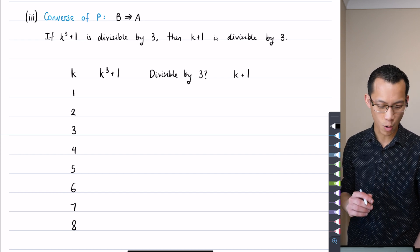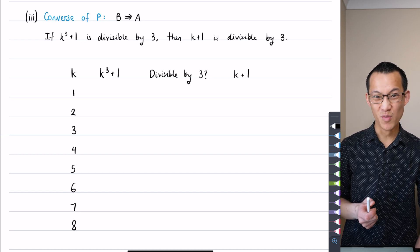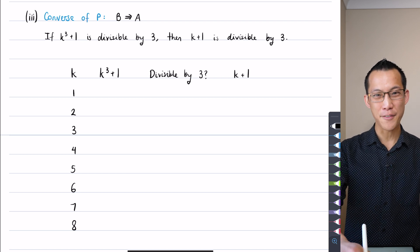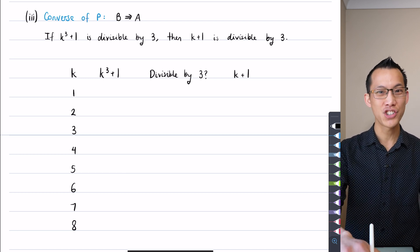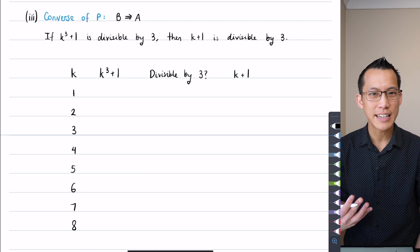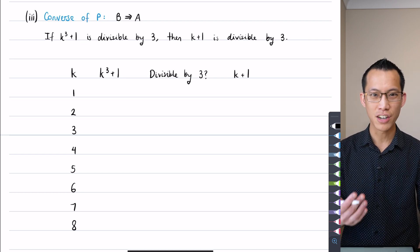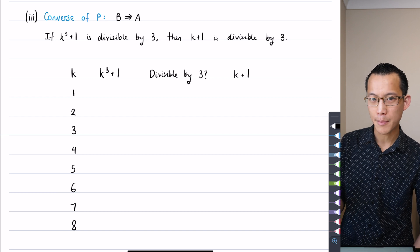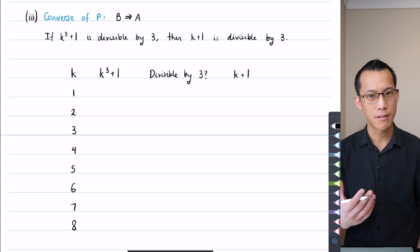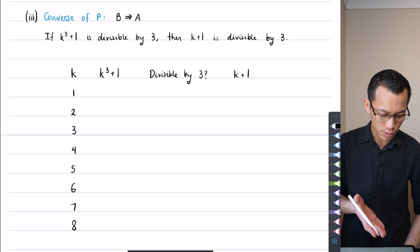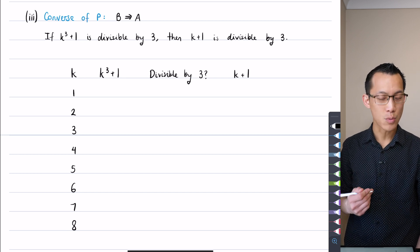The way that I went about this is I need to test some numbers. I need to get a vague sense of am I heading in the right direction, or all I need is a single counter example and then I can know it must be false sometimes, which means I can't prove it true for all values of k. So I'll try some values of k and see what happens.